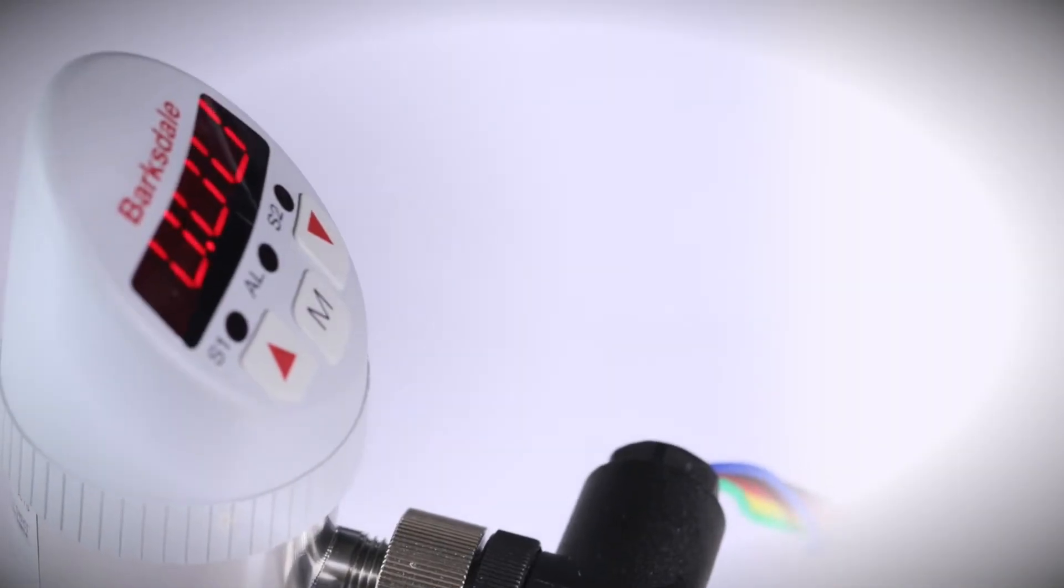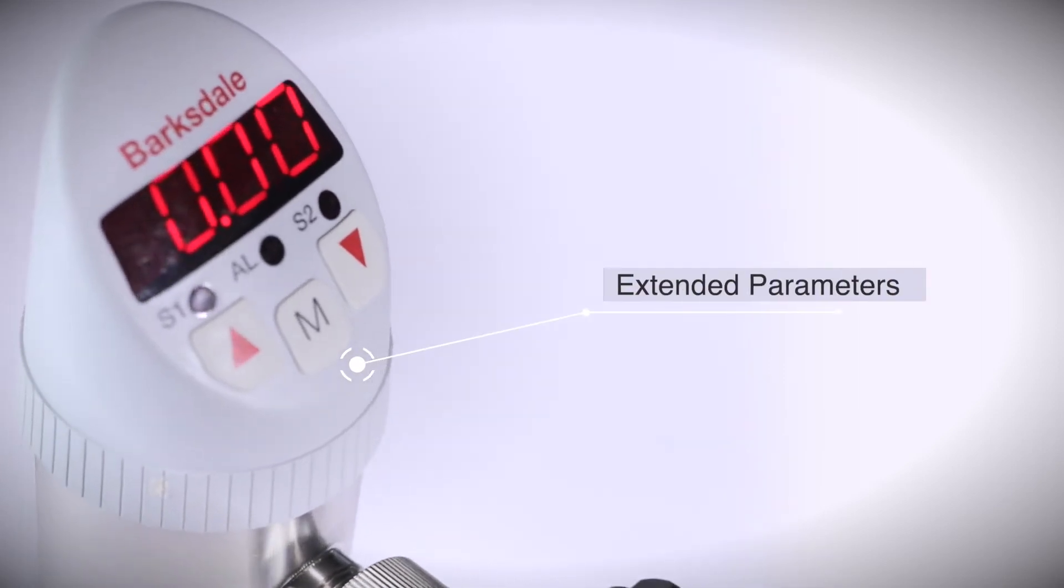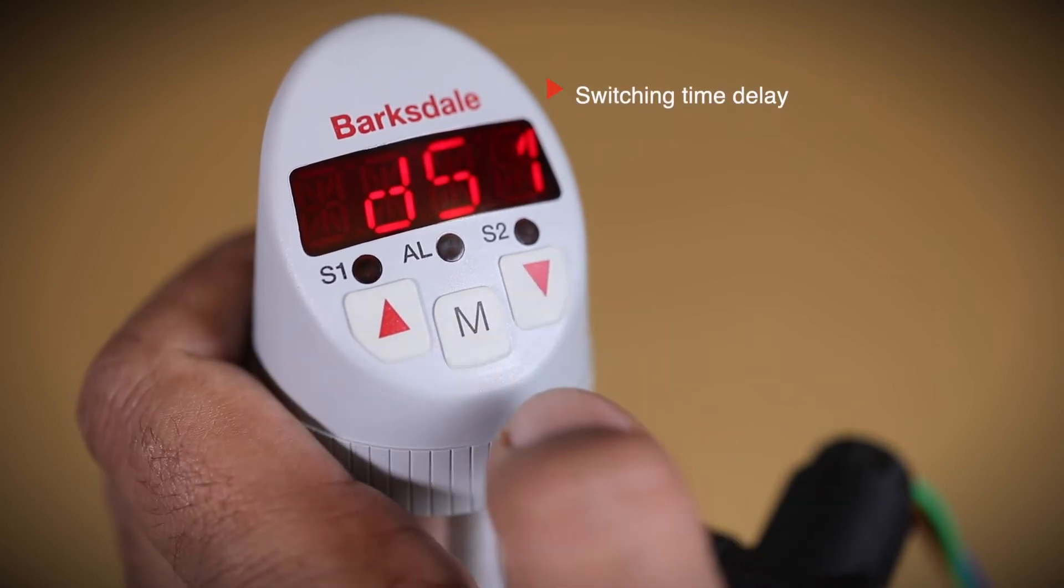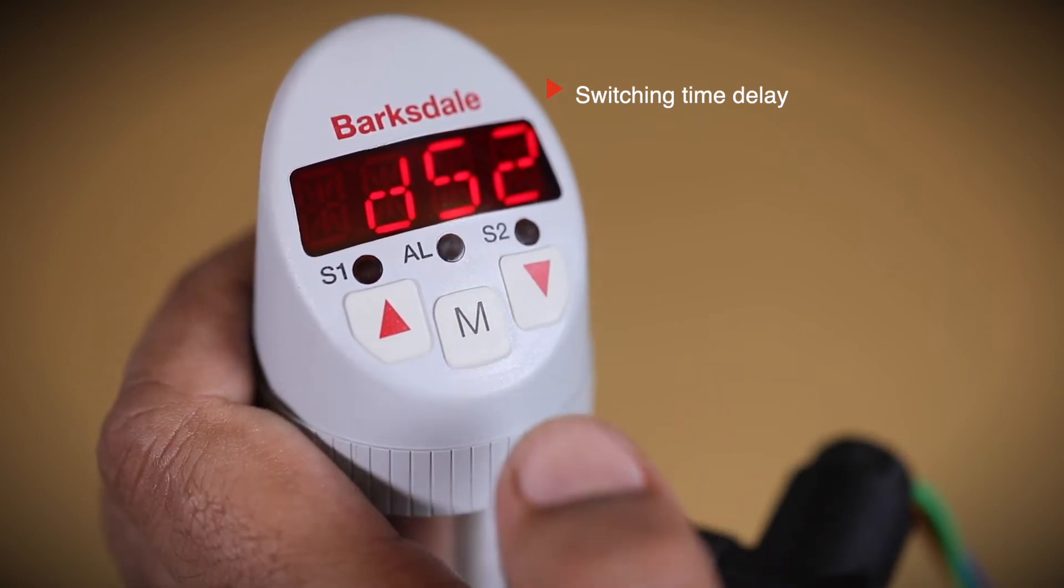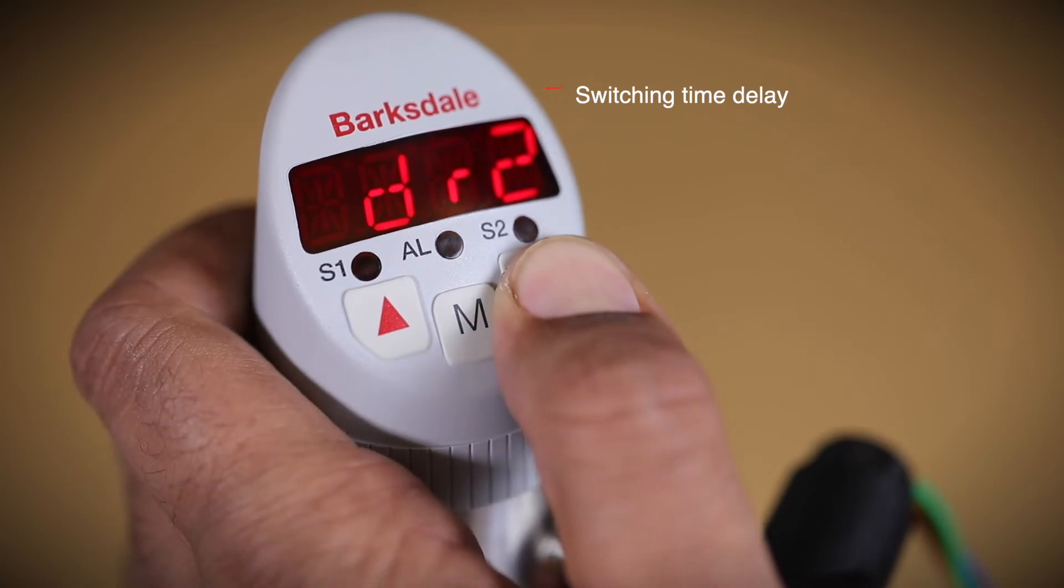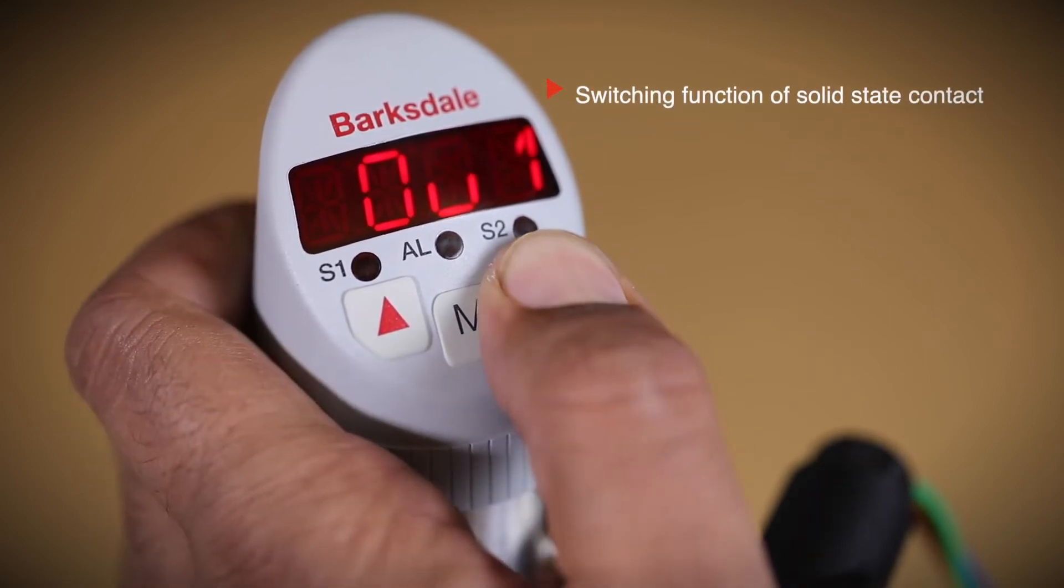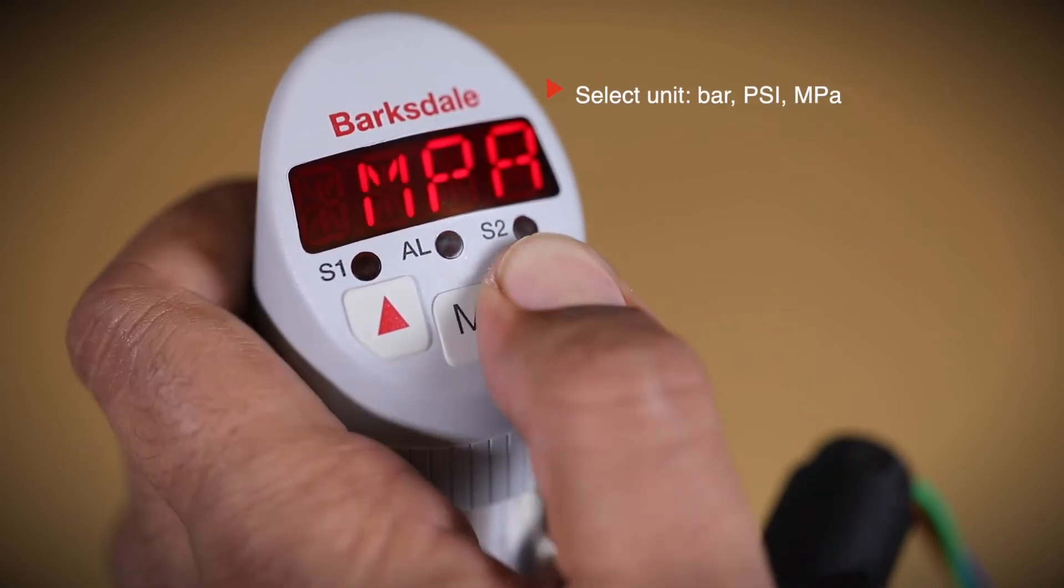BPS 3000 has features to set the extended programming functions such as resetting the device to factory setting, switching time delay, switching function of output 1 and 2, setting the pressure units, and more.